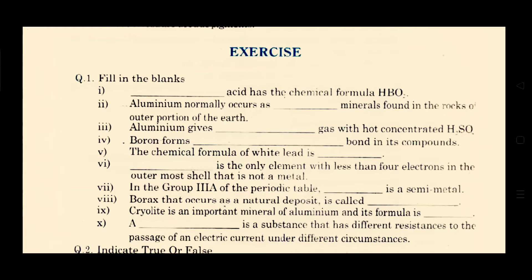The number seven fill in the blank is in the group 3A of the periodic table, dash is a semi-metal. As we know, in the group 3A the boron behaves as a semi-metal.